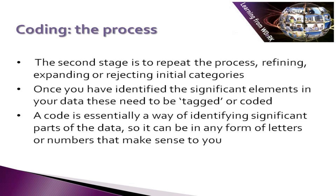From this sort of process you will have developed an initial coding scheme which has roughly divided your material into units. The second stage is to repeat the process, refining, expanding, or rejecting initial categories. Once you have identified the significant elements in your data, these need to be tagged or coded. A code is essentially a way of identifying significant parts of the data, so it could be in any form of letters or numbers that make sense to you.